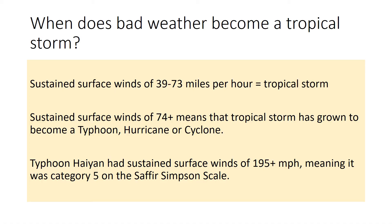Before we continue with Typhoon Haiyan, let's remind ourselves of the difference between a tropical storm and a typhoon. Something is called a tropical storm if the surface winds are sustained at a speed of around 39 to 73 miles an hour. If those wind speeds become sustained at over 74 miles an hour, that storm has grown to become a named storm such as a typhoon, a hurricane, or a cyclone.